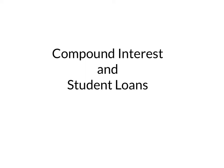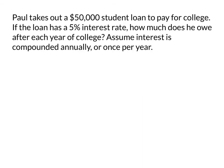In this video we will look at how compound interest builds and affects your student loan balance. The first example: Paul takes out a $50,000 loan to pay for college. If the loan has a 5% interest rate, how much does he owe after each year of college? Assume interest is compounded annually, or once per year.